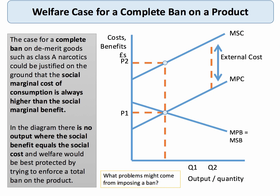Occasionally, with demerit goods, there could be a case for a complete ban. This diagram shows the case where there is a huge negative externality from the product — the vertical distance between the marginal social cost and marginal social benefit curves is very large. There is no level of output where marginal social cost is less than or close to marginal social benefit, making a case for a complete ban on the product.